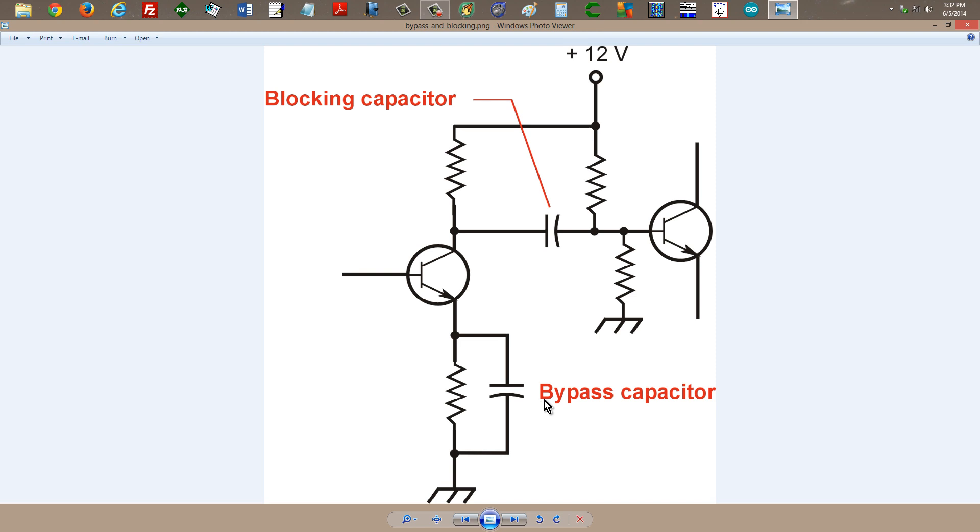So that's what the difference primarily is. The capacitors actually behave in the same way in either application, but we're just taking advantage of different aspects of that behavior. In this example, we're taking advantage of the fact that a capacitor blocks direct current.